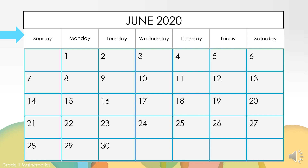What day is the third Saturday? One, two, three, four — there are four Fridays in June.